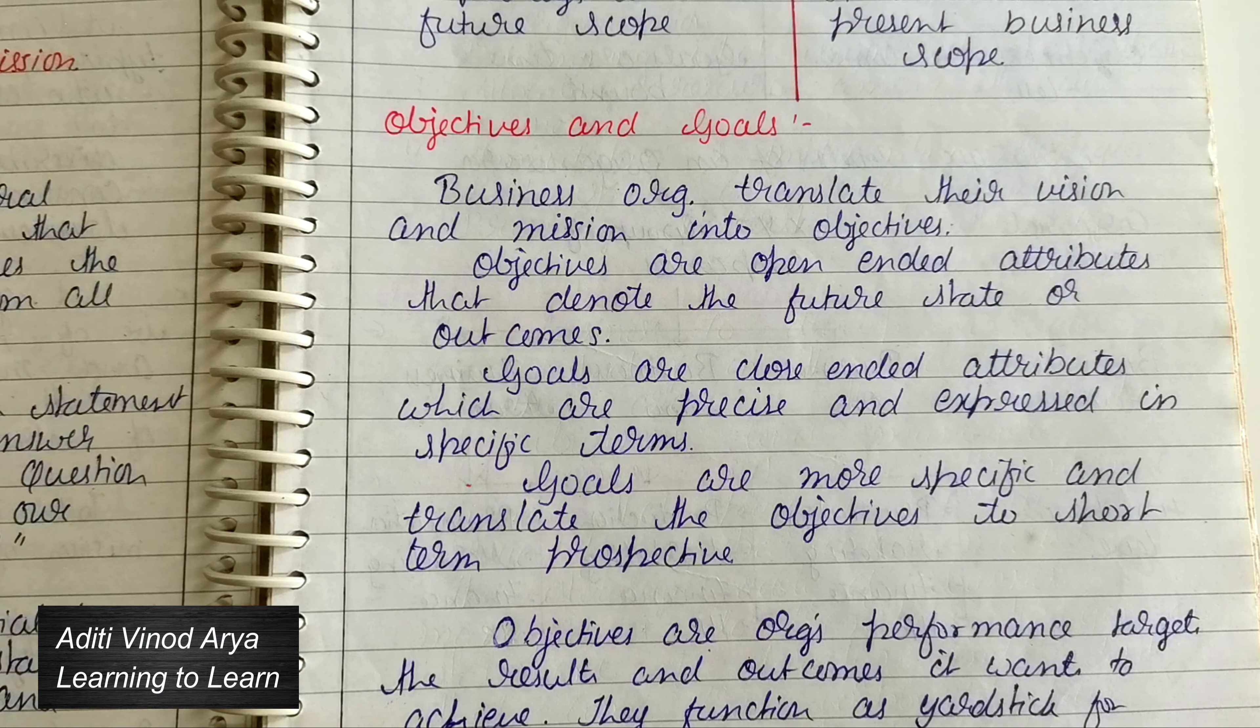Difference between goals and objectives: Objectives are stated in a broad way, not very specific, whereas goals are very specific. You need to understand this. Objectives are open-ended, meaning very flexible, not time-bound, whereas goals are time-bound.